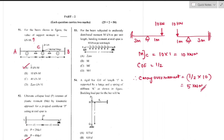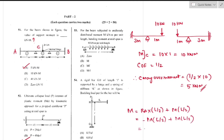Question number 53: For a beam subjected to uniformly distributed moment M kN/m per unit length, the bending moment at midspan is zero — option A is the right answer.